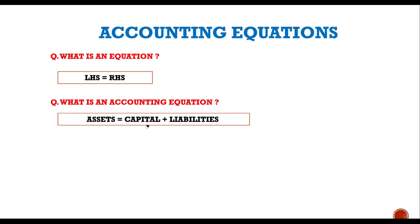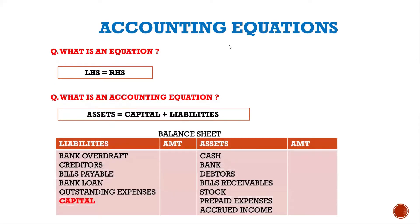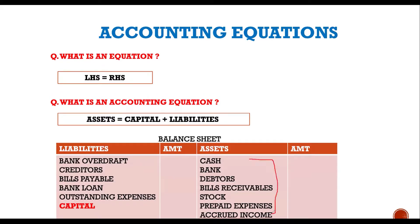The accounting equation is also known as the balance sheet equation. A balance sheet is a sheet which shows assets and liabilities of a business. All assets are economic resources, and these assets are either bought by the owner from his own money, or they are being borrowed — it could be from bank overdraft, creditors, bills payable, or bank loan.